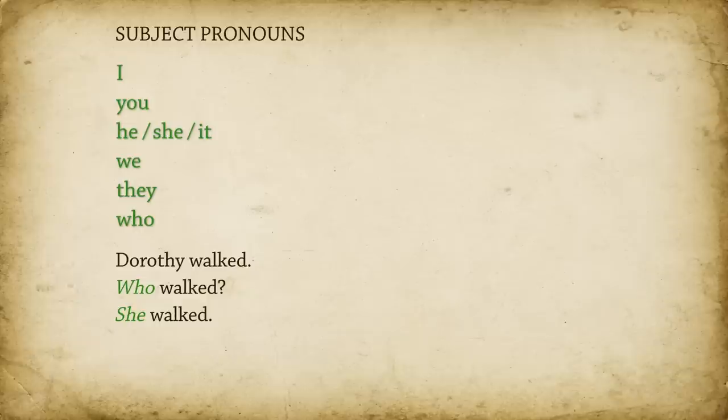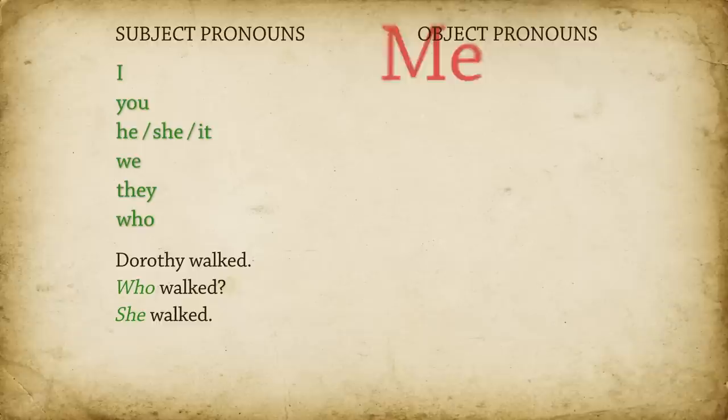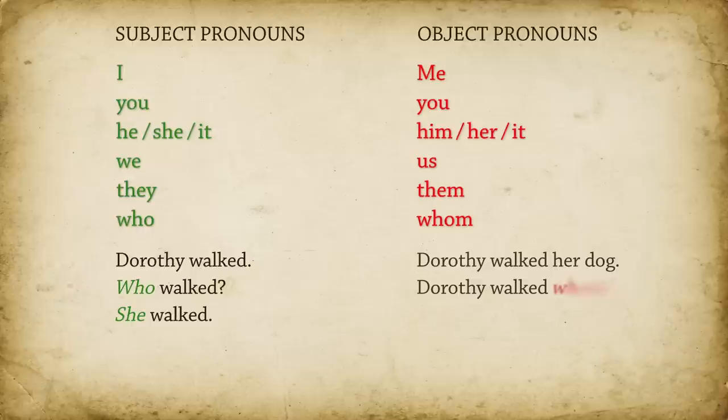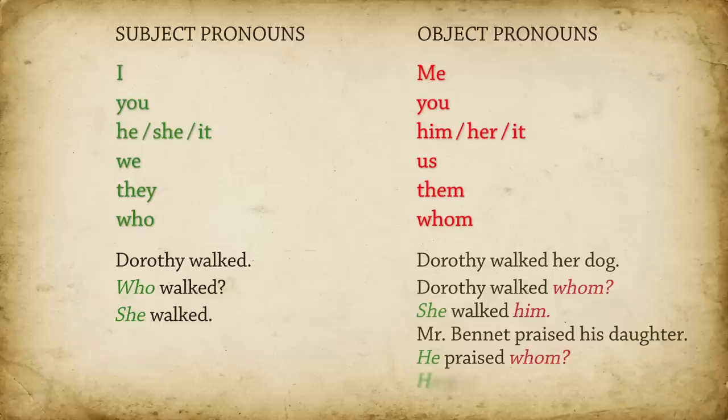But there's another set of pronouns you can use instead of the direct object. We call these object pronouns. This list includes me, you, him, her, it, us, them, and whom. Dorothy walked her dog — Dorothy walked whom? She walked him. Mr. Bennett praised his daughter — he praised whom? He praised her.